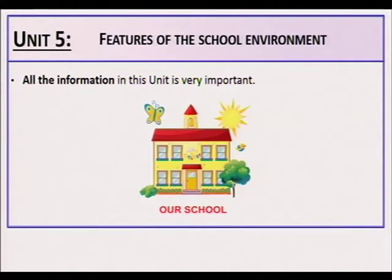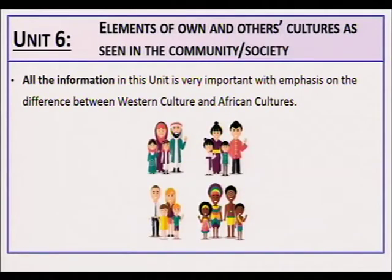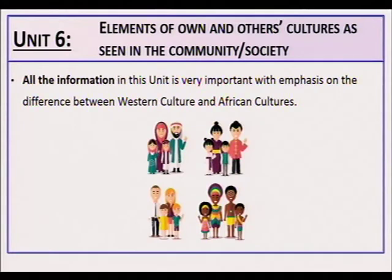Unit 5: Features of the school environment — all the information in this unit is very important. Unit 6: Elements of own and other sculptures as seen in the community or society — all the information in this unit is very important, with emphasis on the difference between Western culture and African cultures.